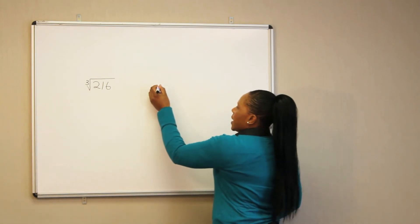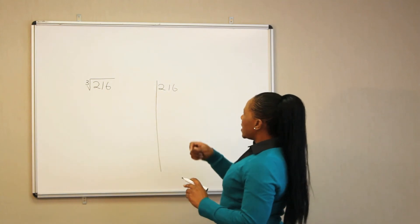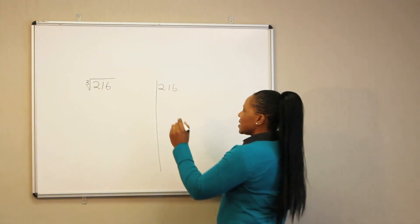The cube root of 216. We look for a number that goes into 216 without giving a remainder. In this case, we have 2.